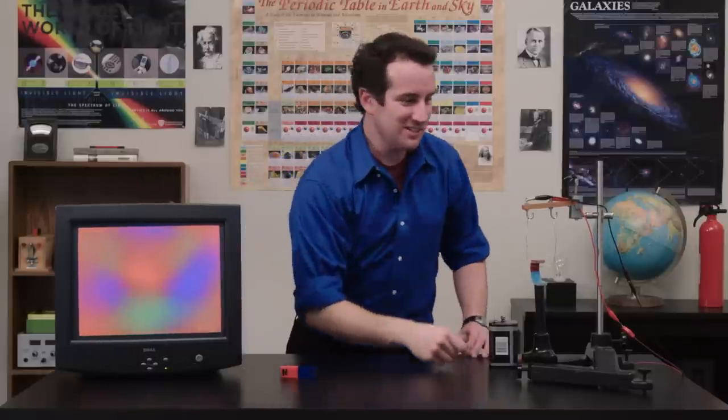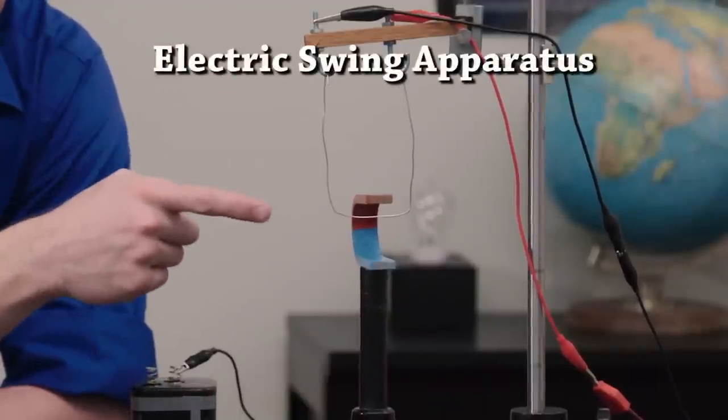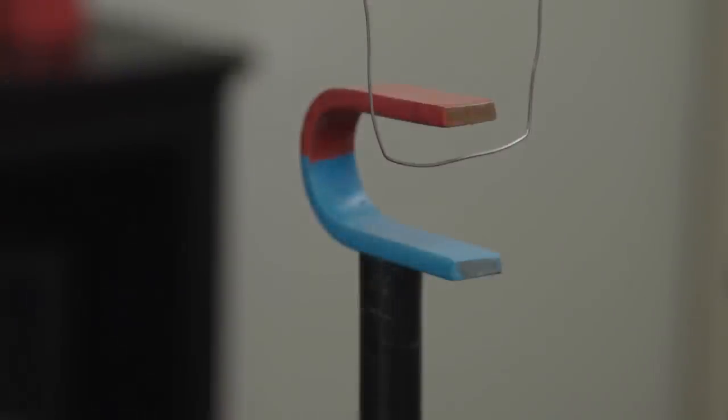Now take a look at this electric swing apparatus. The magnetic field points from north to south, that's red to blue, or down, and the current is going this way, from right to left. Then, when we turn it on, it jumps.